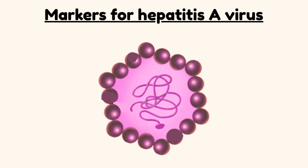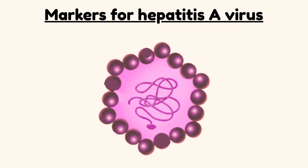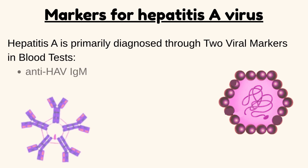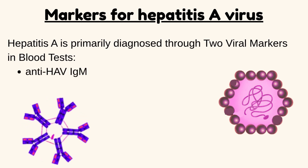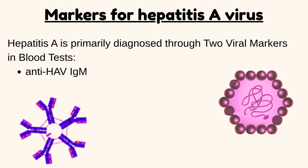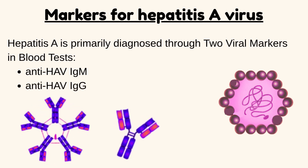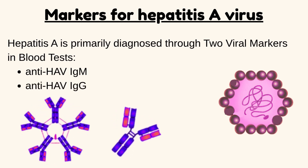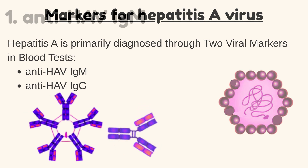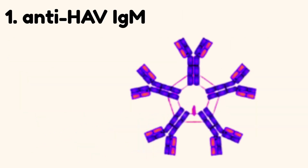What are the markers for Hepatitis A virus? Hepatitis A is primarily diagnosed through two viral markers in blood tests: Anti-HAV IgM and Anti-HAV IgG. We will discuss them in detail.